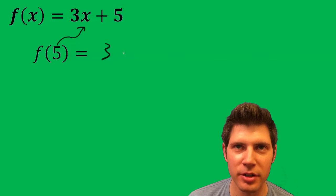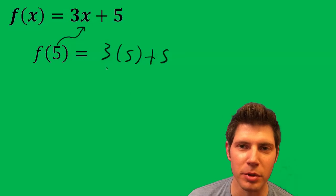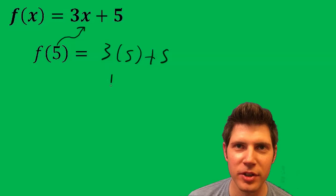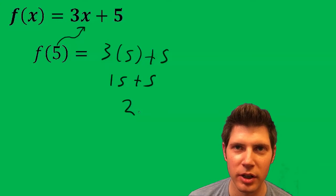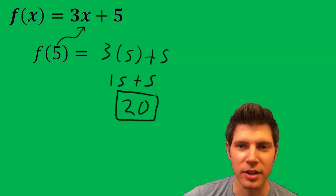So it's going to be 3 times 5 plus 5. 3 times 5 is 15. And then we get 20. And that's it — that's the answer to the question.